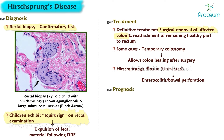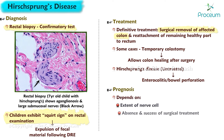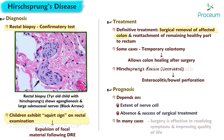The prognosis of Hirschsprung's disease depends on the extent of nerve cell absence and the success of surgical treatment. In many cases, surgery is effective in resolving symptoms and improving quality of life.